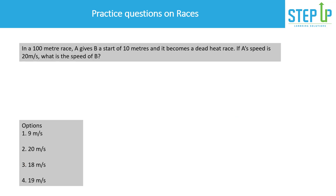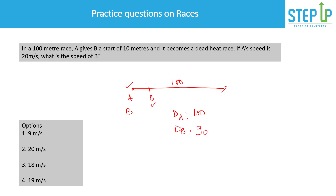Last races question: in a 100-meter race, A gives B a start of 10 meters and it becomes a dead heat race. That means both finish at the same time. A covers 100 meters while B covers 90 meters in the same time. Since time is constant, the ratio of distances equals the ratio of speeds, so speed of A to speed of B = 100:90 = 10:9.